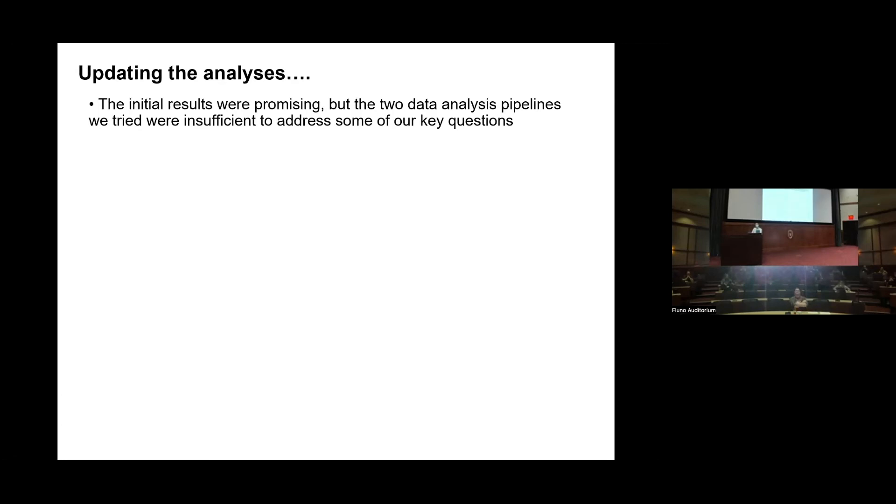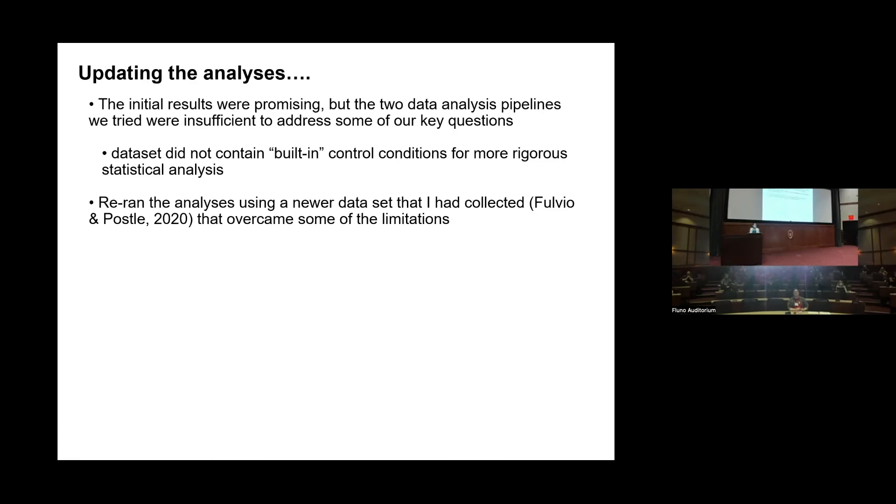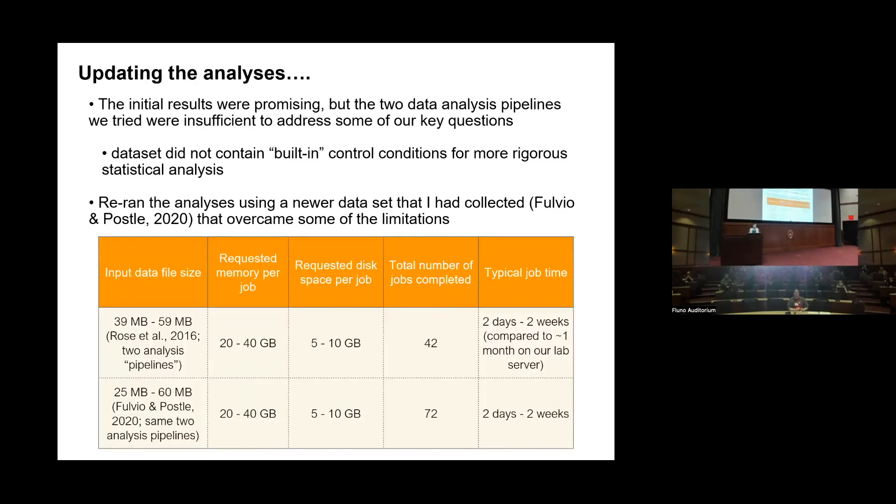We had chopped the data up in such a way that we needed a little bit more to improve our statistical analyses. In particular, we were concerned that this particular data set from an earlier study didn't contain built-in controls that allowed us to do more rigorous statistical analysis. We re-ran those analyses using a newer data set that I collected that could overcome some of these limitations. We had similar numbers here, but because my new data set had more subjects involved, we actually successfully completed almost twice the amount of jobs.